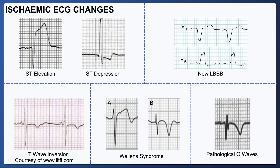The presence of dynamic T-wave inversion in the context of chest pain can be suggestive of myocardial ischemia. T-wave inversion can also be a normal variant in some healthy individuals. The meaning of 'dynamic' is that they are either actively evolving during the assessment, or if you compare the current ECG with previous ECGs, you notice that the T-wave inversions are new.